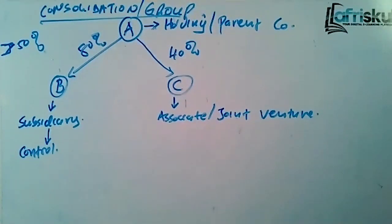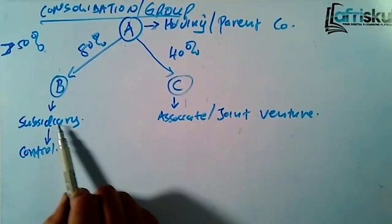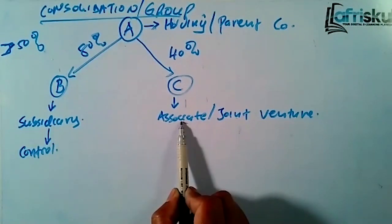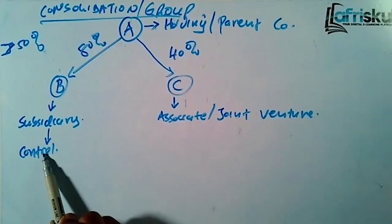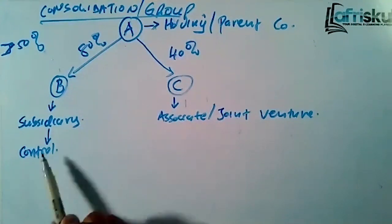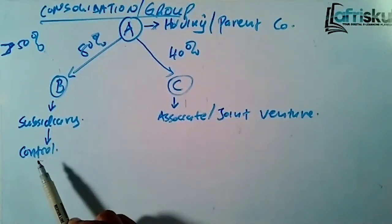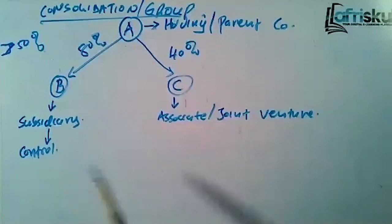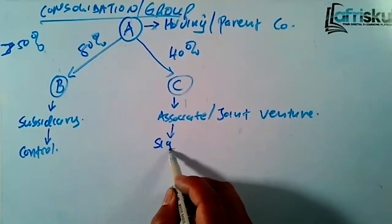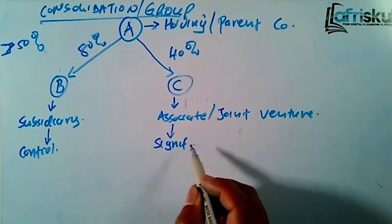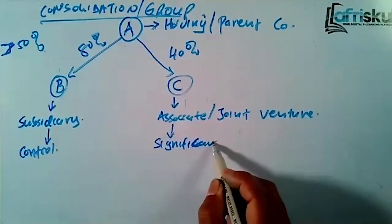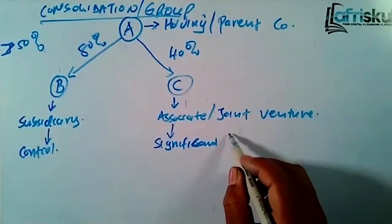For the joint venture, there must be an agreement to have what we call joint control. Another difference between a subsidiary and an associate is that for the associate we cannot control them — with a subsidiary you are controlling them since you have more than half of the shares. For the associate, you cannot control them, but you have what we call significant influence.